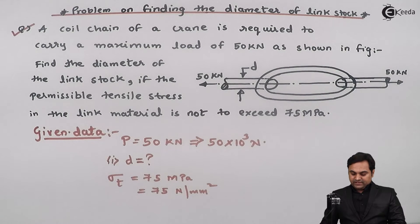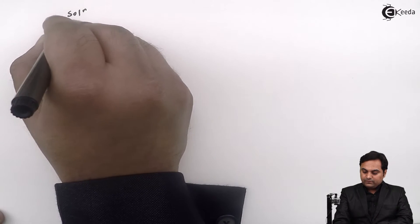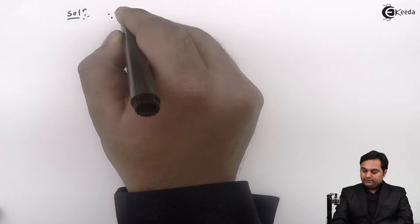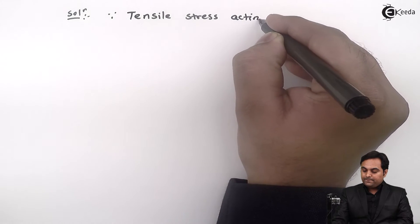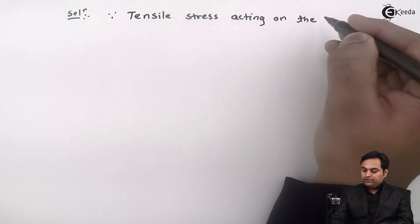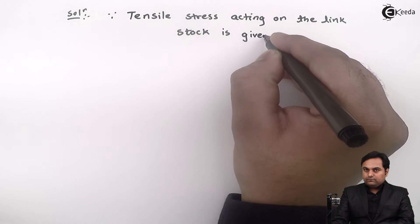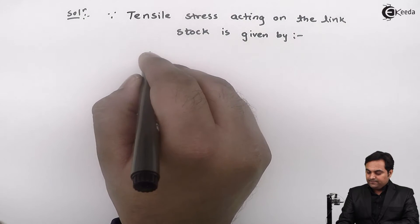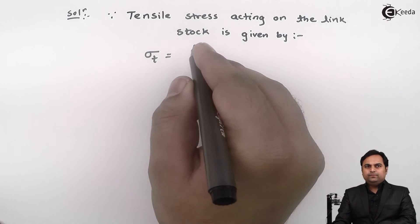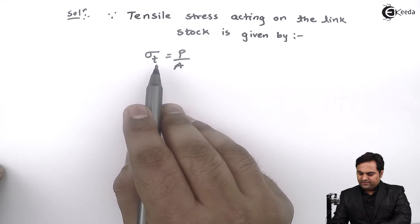Since we have to find the diameter and stress and load have been given, let us start this problem by using the formula of stress. The tensile stress acting on the link stock is given by σT = load/area.